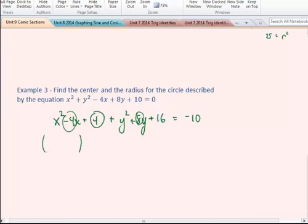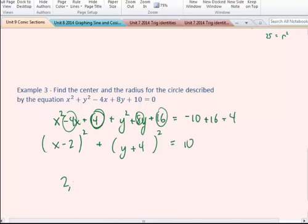Now I have my two perfect square trinomials, and I'm going to factor. And this is going to be, I have to add those amounts to the other side. So, it's going to be plus 16 and plus 4. So, the end result down here is going to be 10. Now the center of the circle is going to be at 2, negative 4, and the radius is going to be √10, which is a little bit over 3.